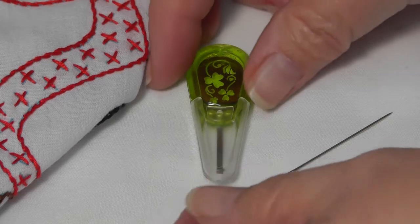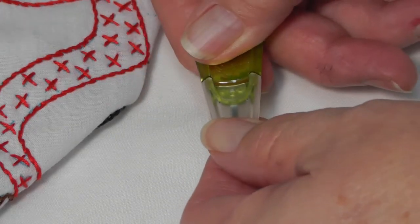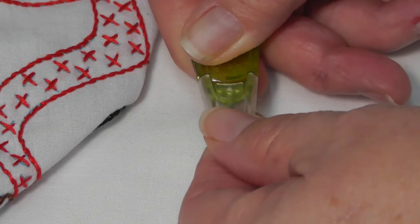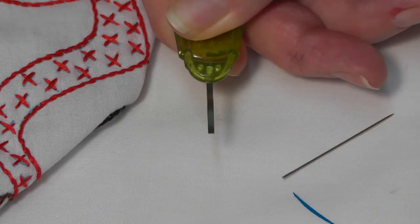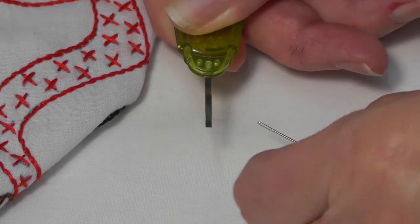This threader has no thin wires to break, a snap-on cover to protect the threader from damage, and a sturdy apple green handle that you can easily see while embroidering.